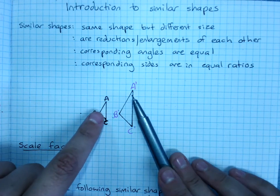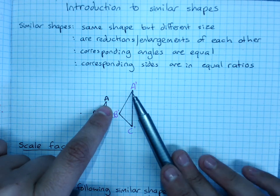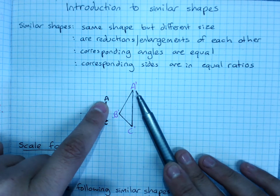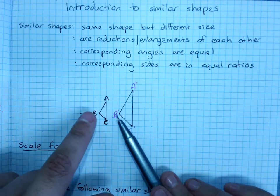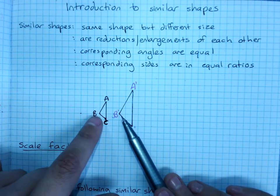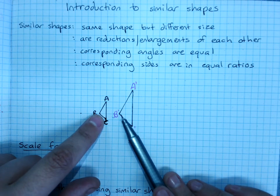This is the smallest angle in this triangle. The two smallest angles match, they're corresponding. This is the largest angle. The two largest angles match, they're corresponding.